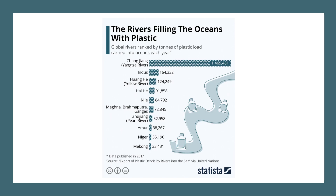8 million tonnes of plastic ends up in the world's oceans every year. It gets there through multiple routes — wind, dumping, and rivers. Rivers are a key pathway for plastic waste entering the oceans, with something like 90% of all plastic entering the world's oceans coming from just 10 rivers, including the Yangtze, which according to this graphic is by far the biggest single source.